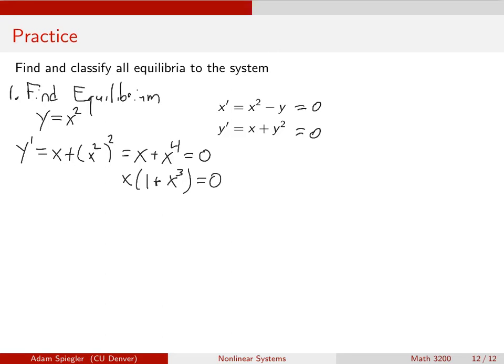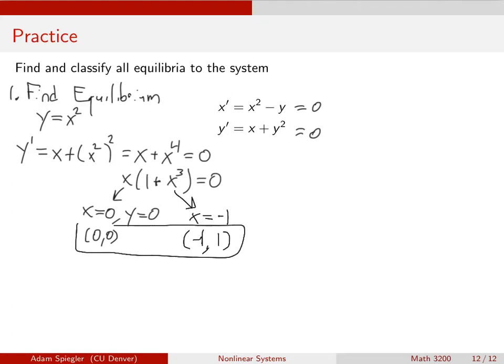We can look at each of these factors. From this one, we can see that x has to equal 0, in which case y equals x squared implies y is also equal to 0. So we've got one equilibrium at (0,0). Looking at this factor, it has only one real solution, which is x is equal to minus 1. And if x is equal to minus 1, then the other condition is that y would have to be x squared, so that would give us a y value of 1. So we've got two equilibrium, one at the origin, one at minus 1, 1.